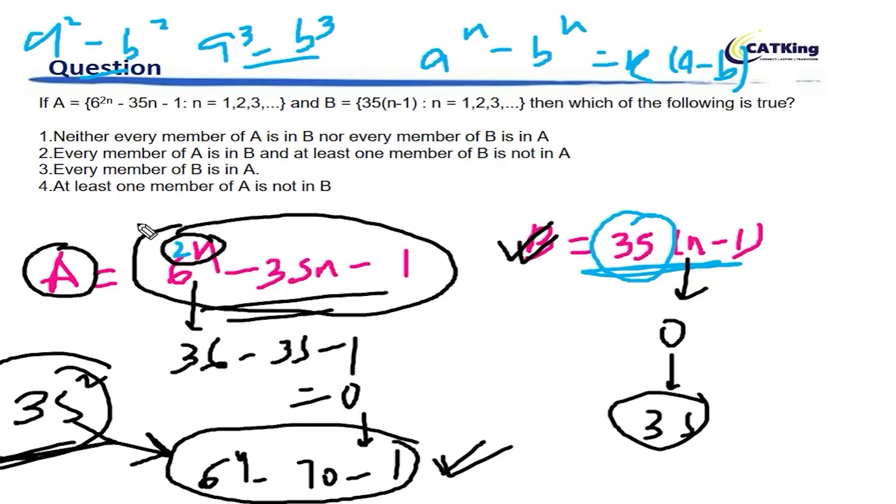This means that every number of A will be in B, but not every member of B will be in A. Every member of A will be in B, but not every member of B will be in A.